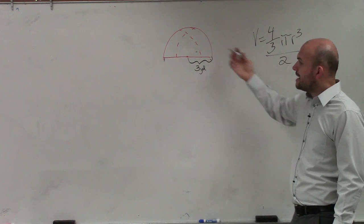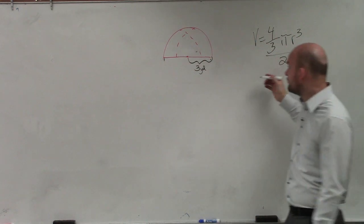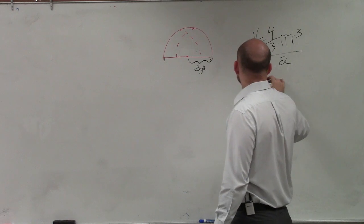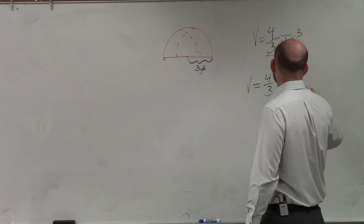Now, they provided us with the radius, and that's the only thing we really need to know besides the formula. So Dominic, all I simply do is take 4 thirds times pi times 3 cubed.